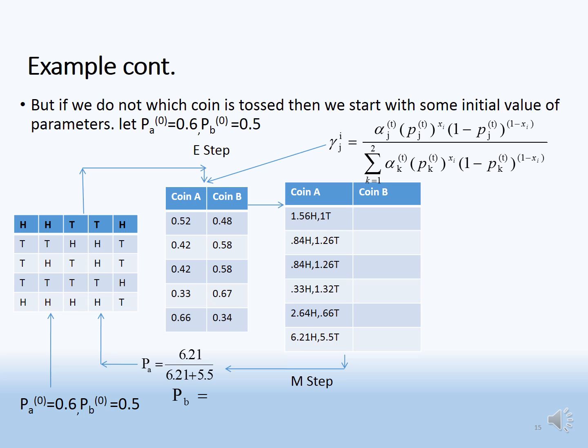We then repeat these steps — calculating expected probabilities and updating parameter values — until the parameter values converge, giving us the final model parameter estimates.